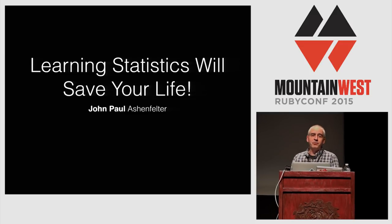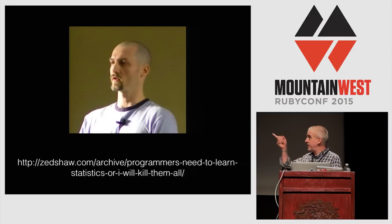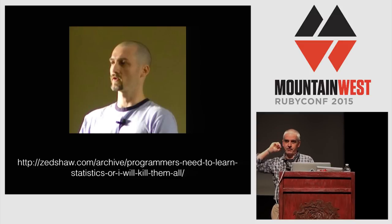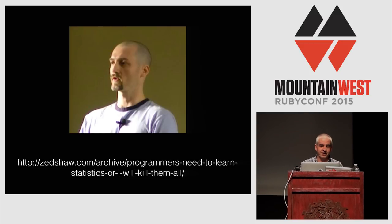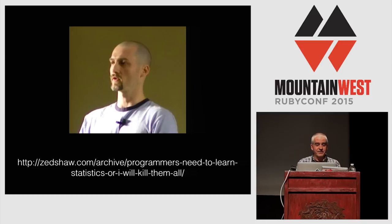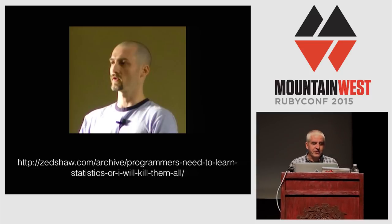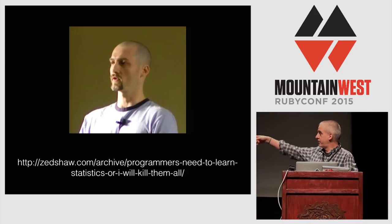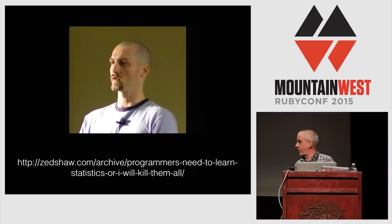If you've been in the Ruby community for a while, you might know this guy, Zed Shaw, who wrote Mongrel. For you young folks, Mongrel was what you used before there were unicorns and rainbows to run your server. He wrote this blog post that really affected me quite a while ago, and it was literally called 'Programmers Need to Learn Statistics or I Will Kill Them All.'